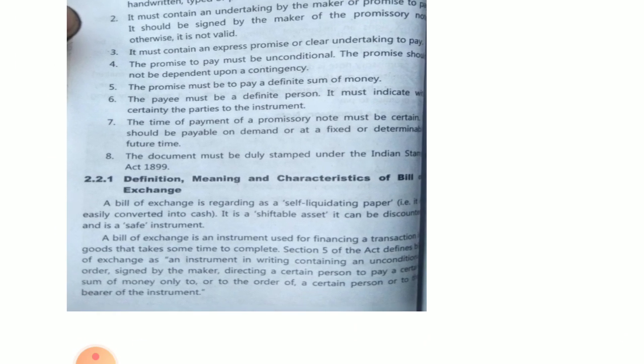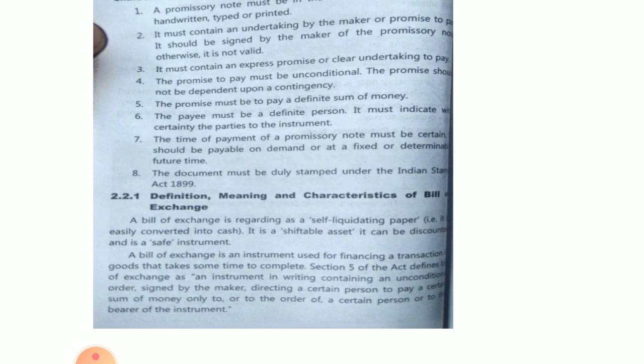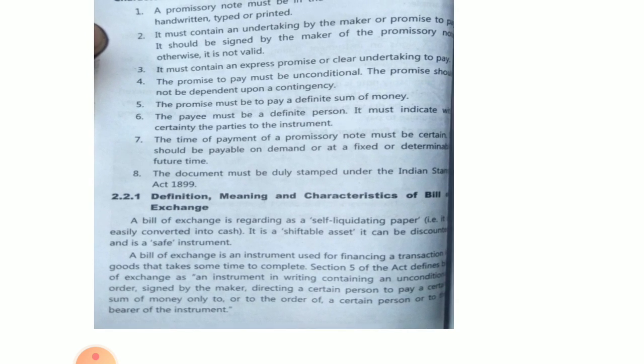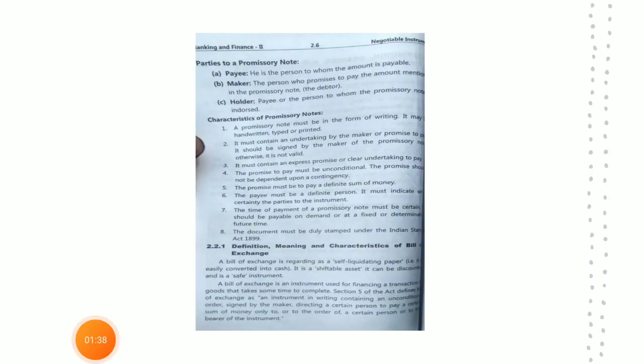If you have received some goods and cannot pay immediately — if you want to pay after three months, once you get the payment — then you can do it with the help of a bill of exchange. So it is an instrument according to Section 5 of the Negotiable Instruments Act, 1881.